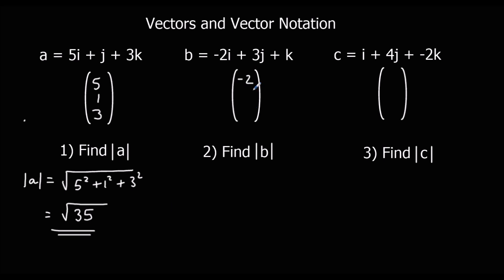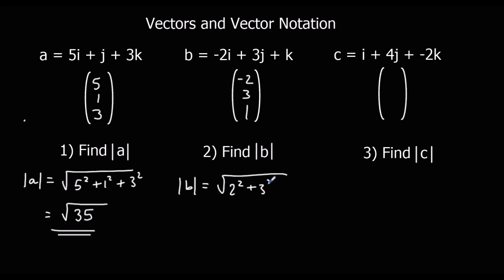For b, we've gone back 2, up 3, and out 1. So what's the distance of that journey? We don't have to worry about a negative sign here, because we just want the distance — we don't want the direction anymore, it's just the magnitude now. So it's 2 squared, 3 squared, and 1 squared. 4 plus 9 plus 1 is 14, so it's root 14.